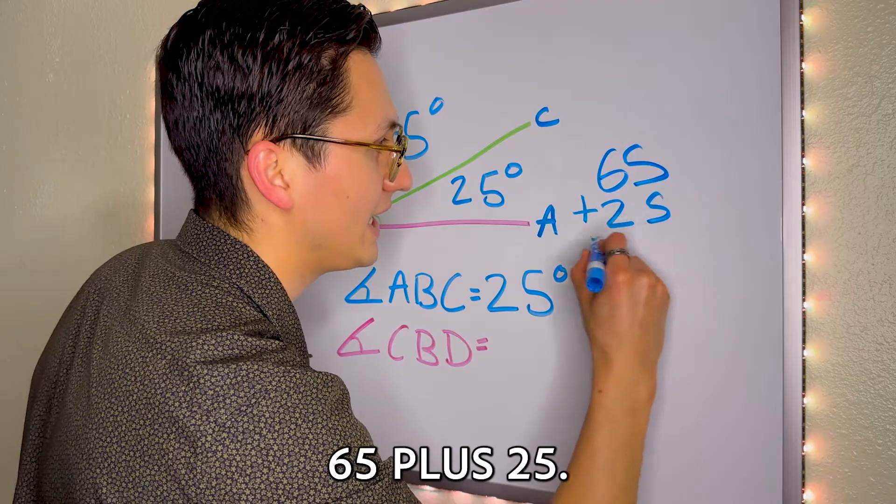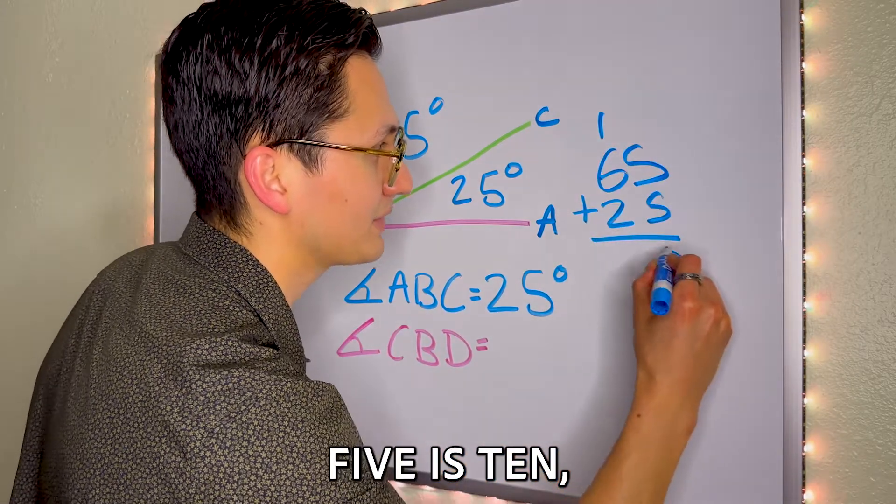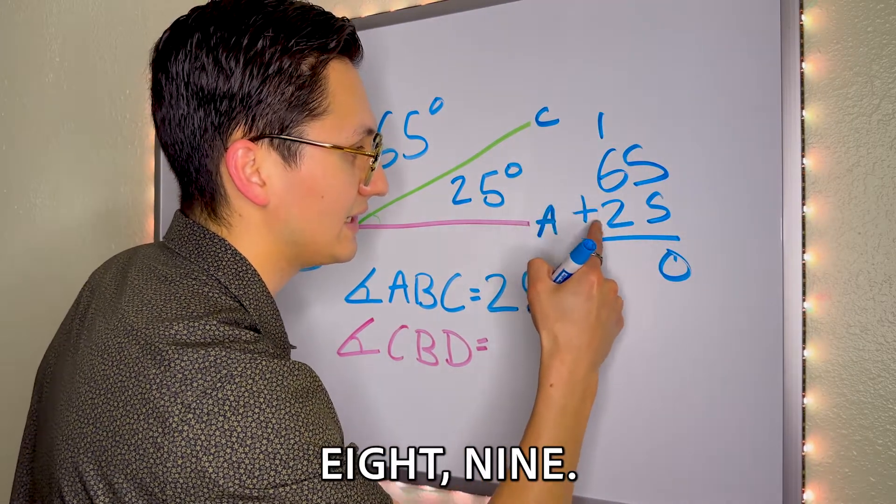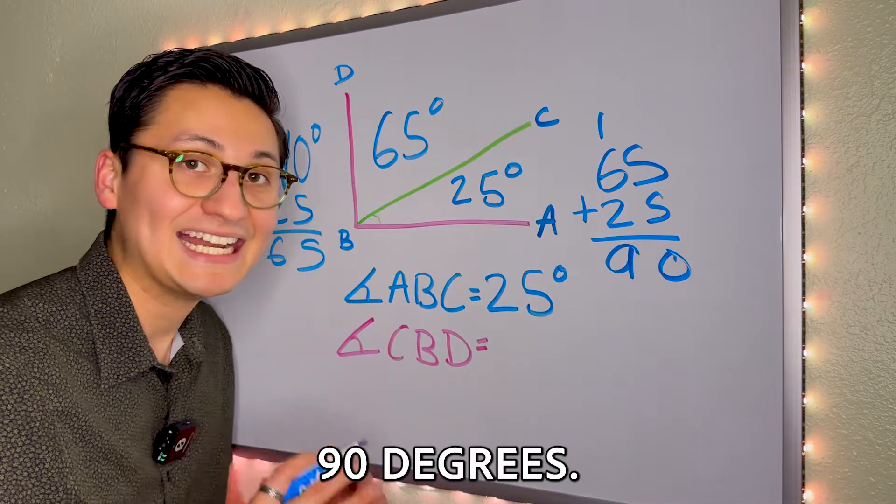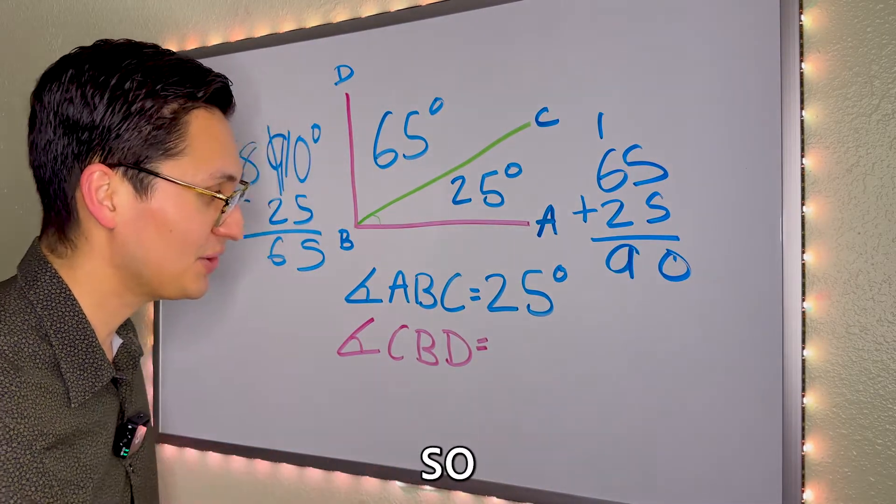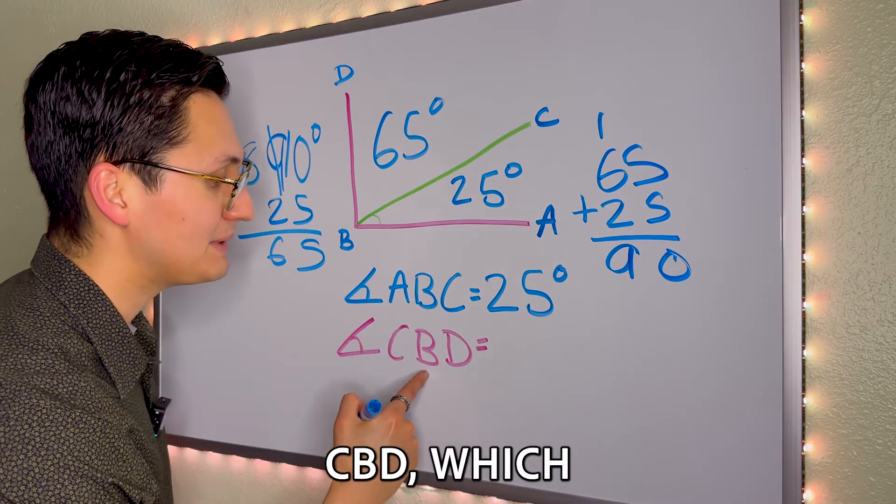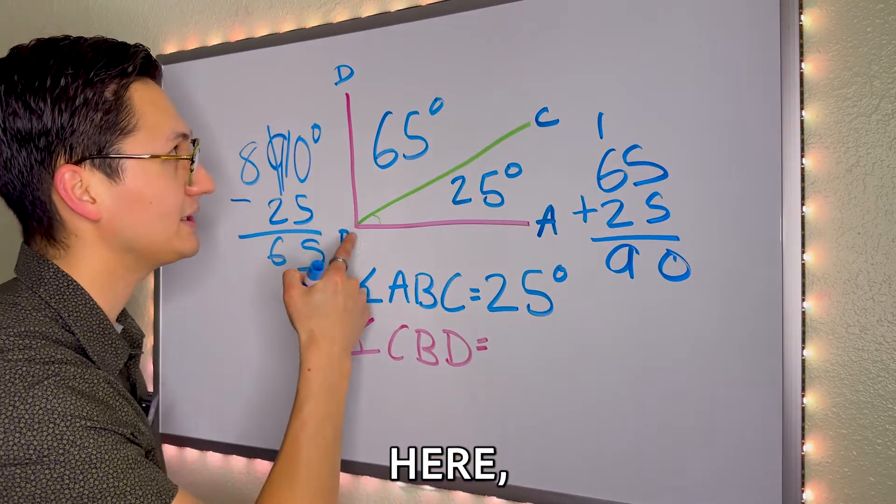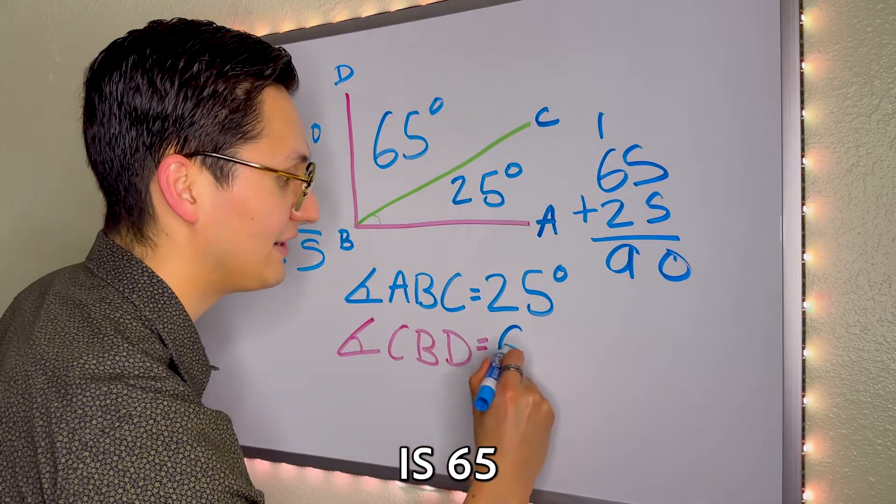65 plus 25, 5 plus 5 is 10, 6, 7, 8, 9. It gives us 90 degrees. So the angle C, B, D, which is this one right here, is 65 degrees.